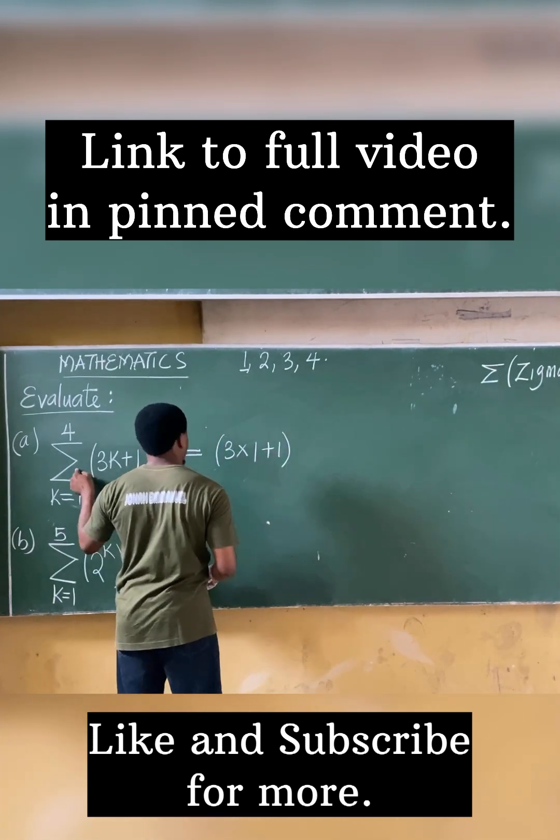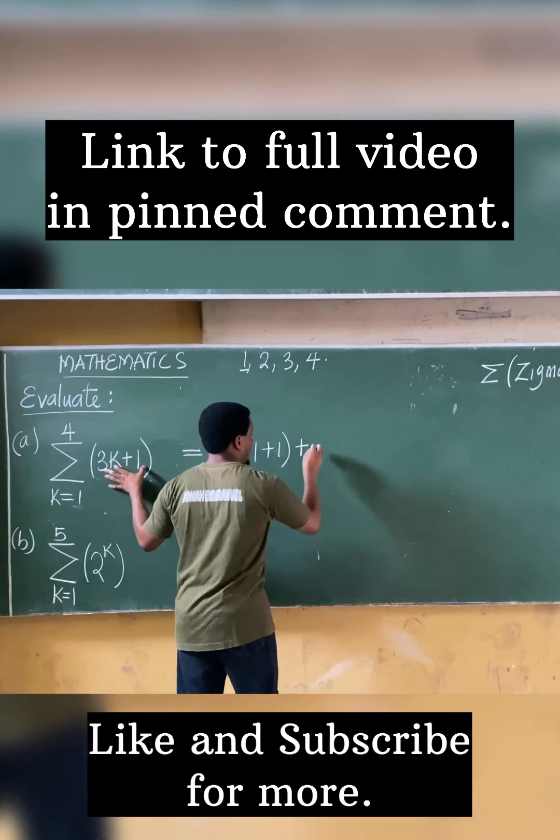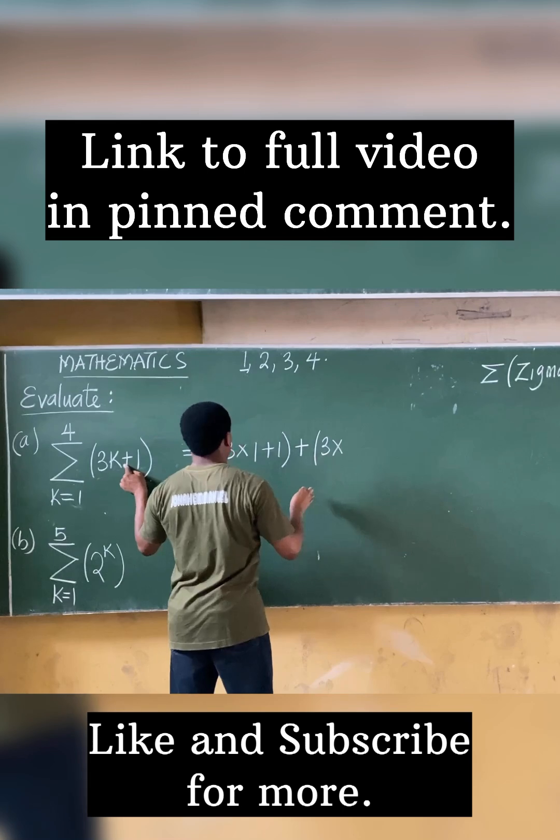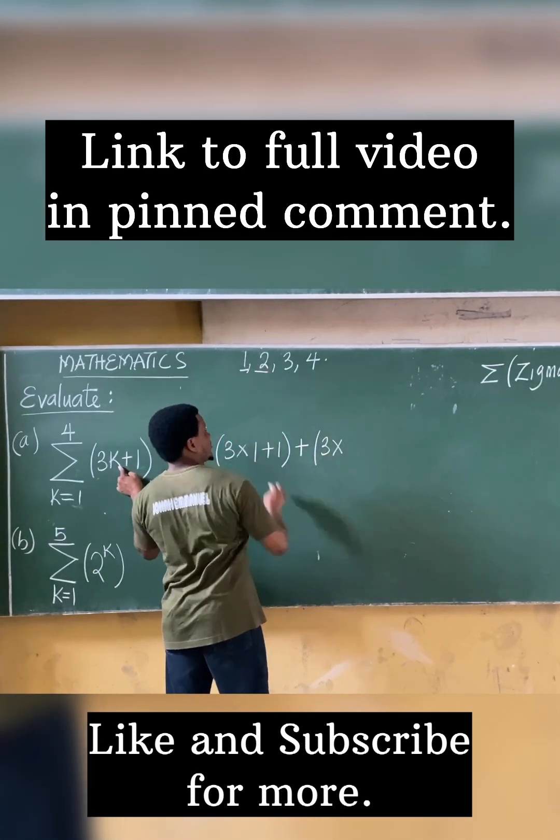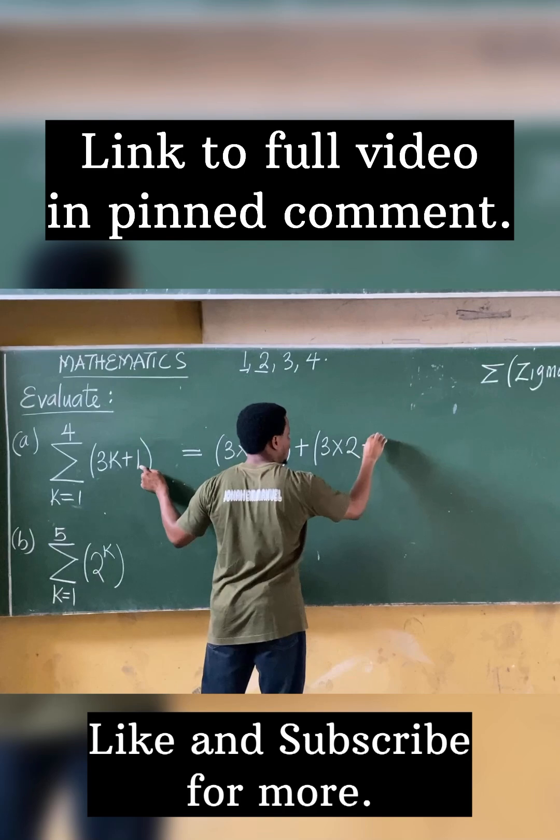Remember you're doing summation, sigma. So it becomes plus. Plus, I'll repeat the same term. That becomes 3k, which becomes 3 times, I'll take k now as my second term, which is 2, then plus 1.